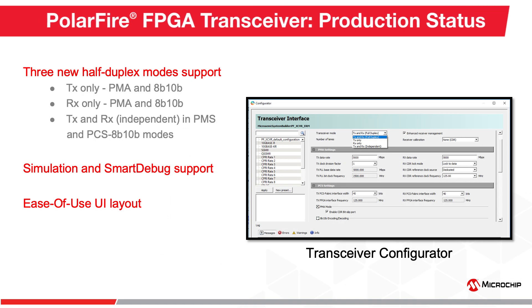This release moves the PolarFire transceiver into production status with some enhancements. For the first time, half-duplex options are enabled with PolarFire transceiver in PMA and 8B10B modes. With this enhancement, TX-only mode, RX-only mode, and TX and RX-independent mode are supported using the new transceiver configurator. All three of these new modes are supported in simulation and SmartDebug tools.